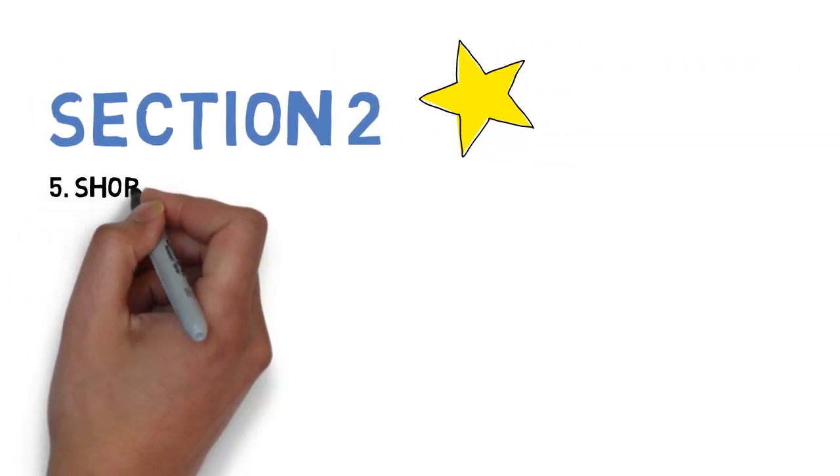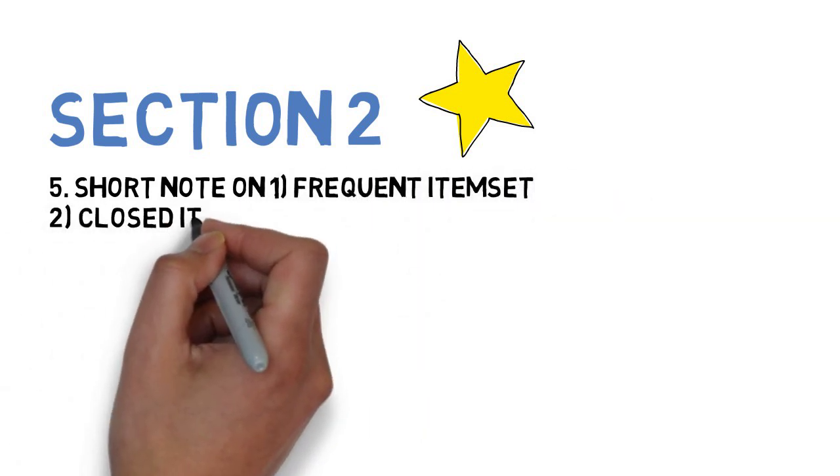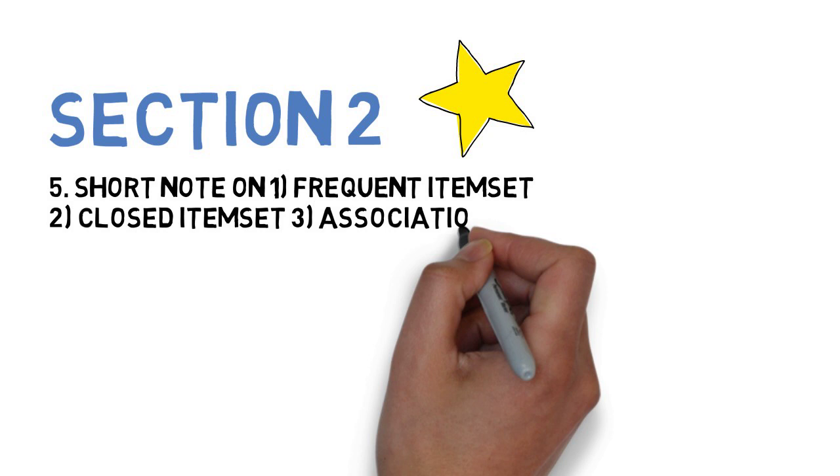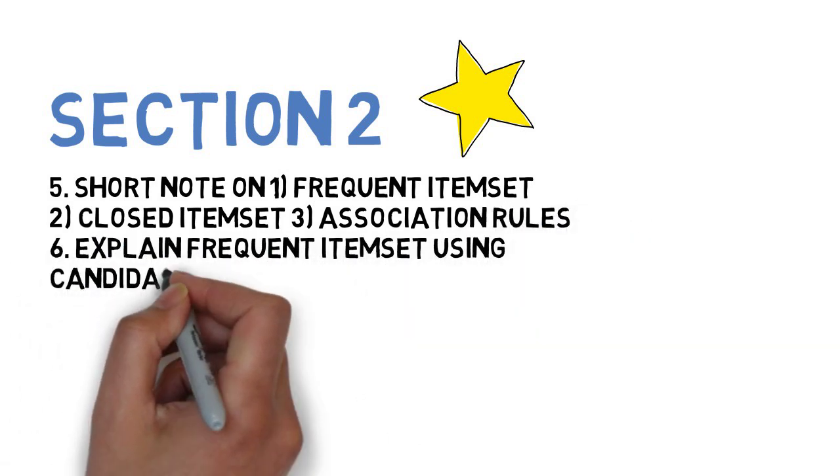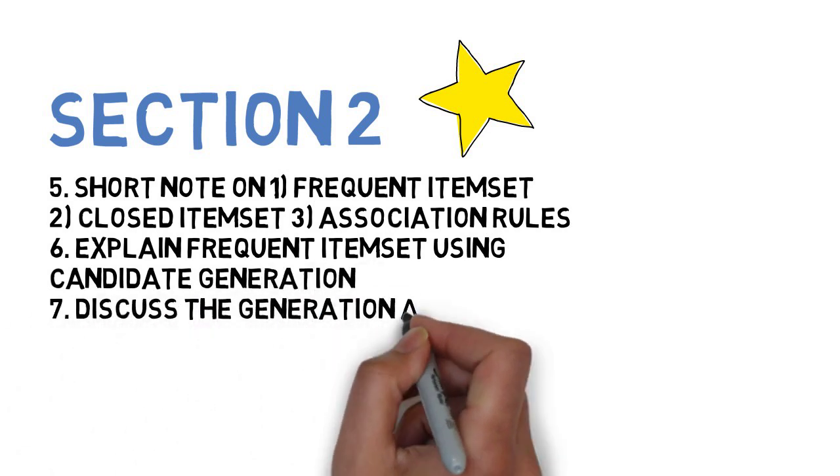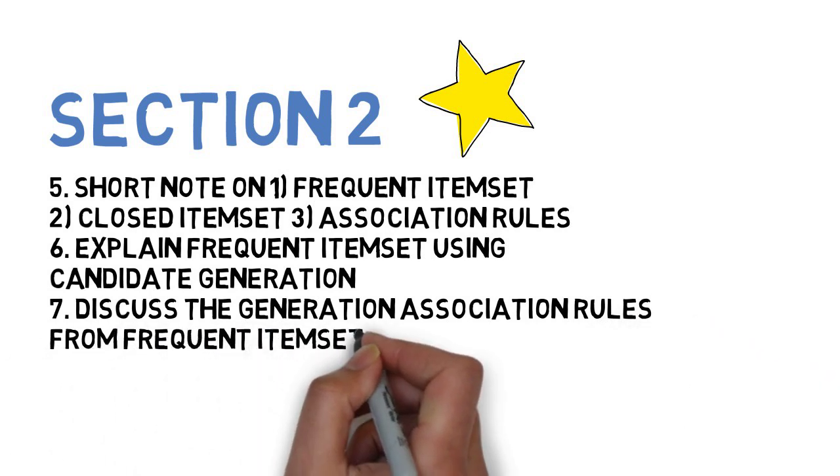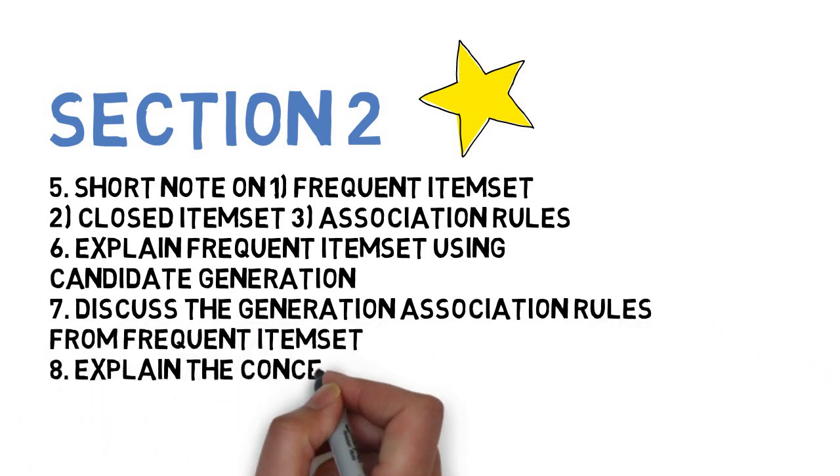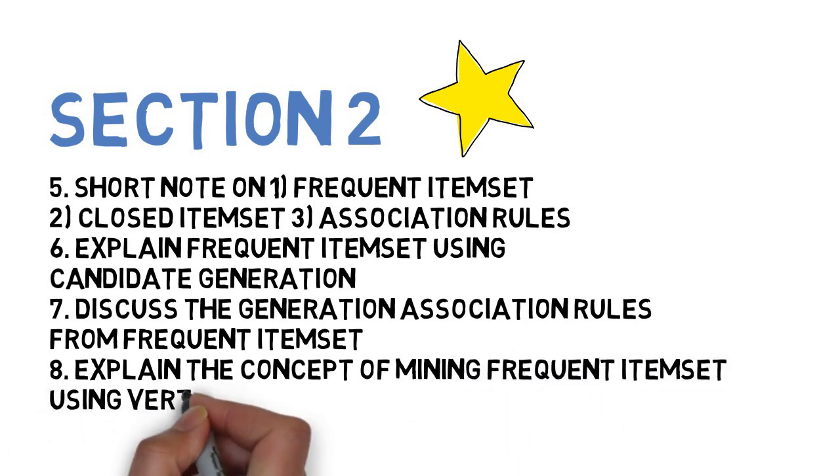In Section 2, you have four questions: Short note on frequent item set, closed item set, and association rules; Explain frequent item set using candidate generation; Discuss the generation of association rules and frequent item sets; and Explain the concept of mining frequent item set using vertical data formats.